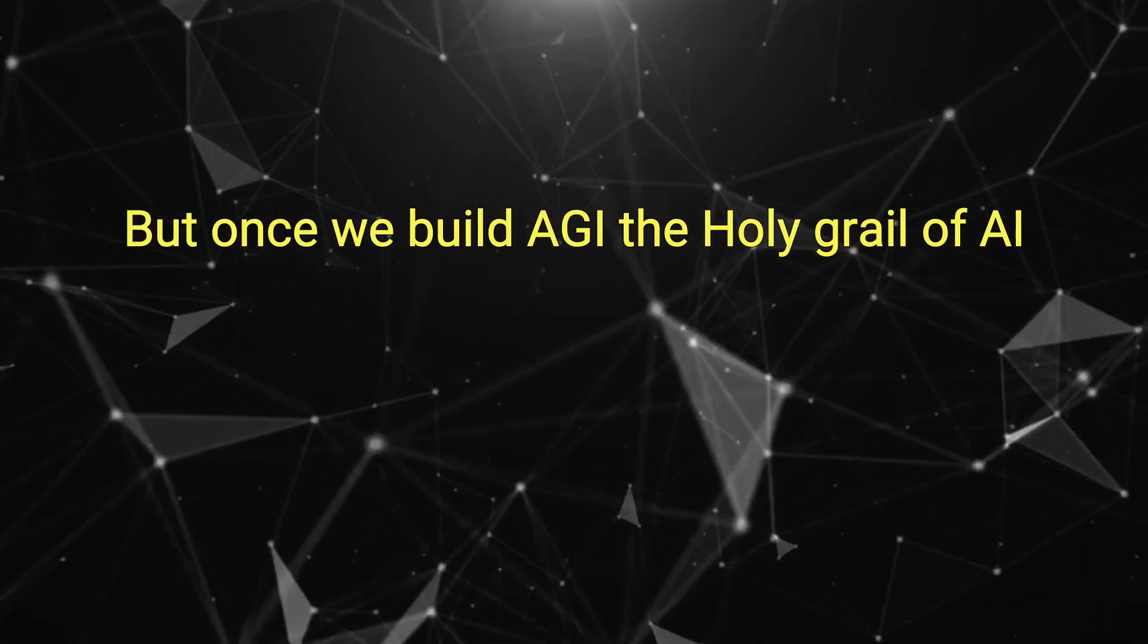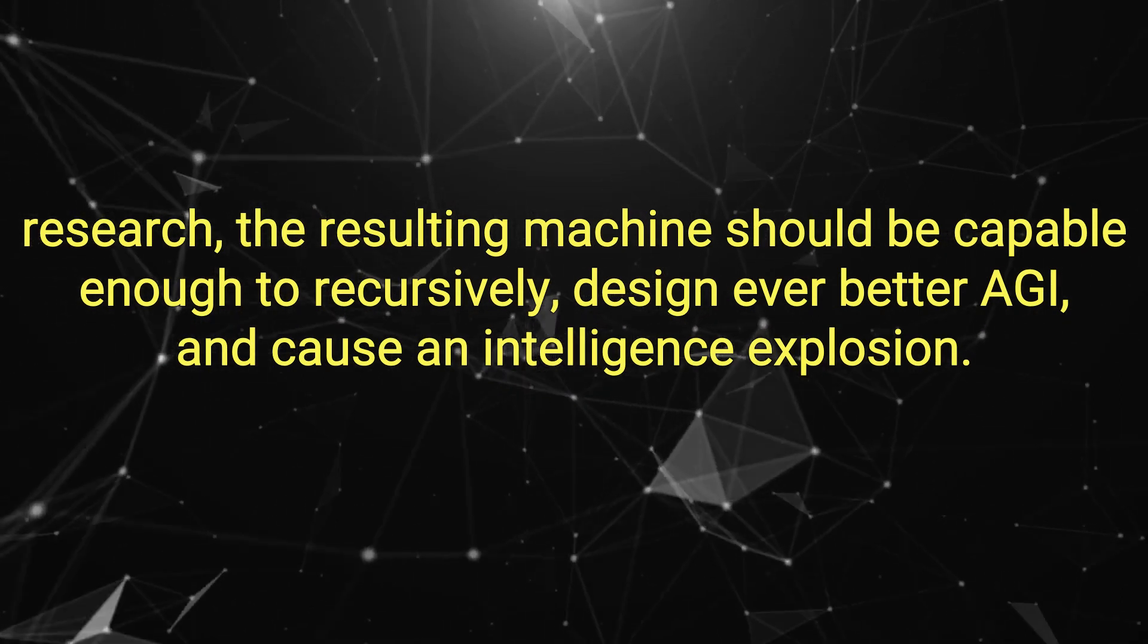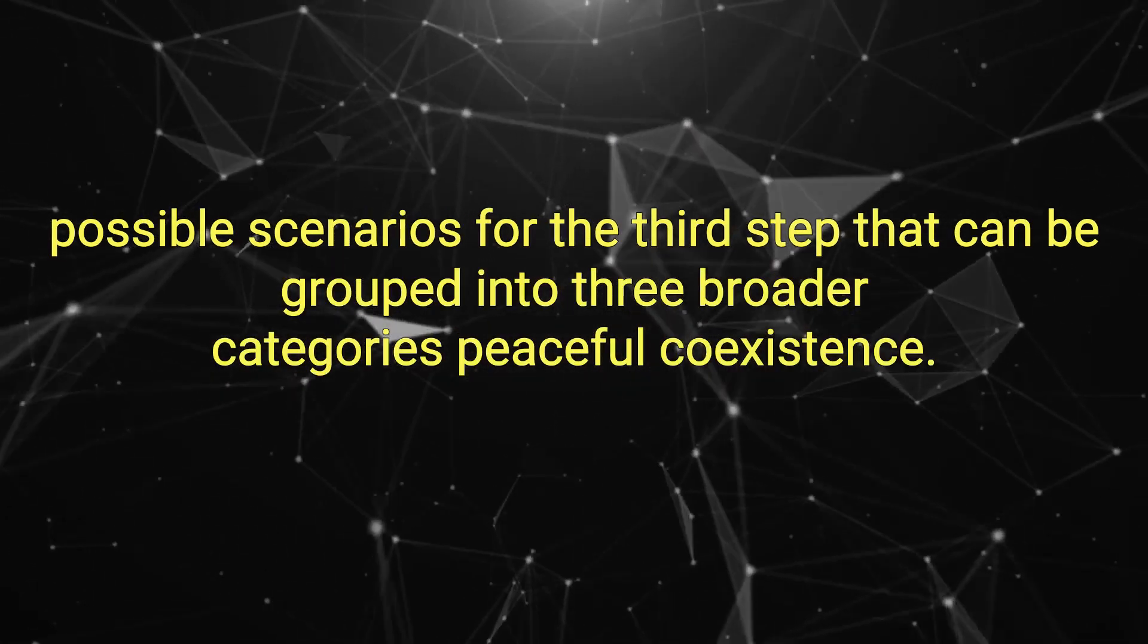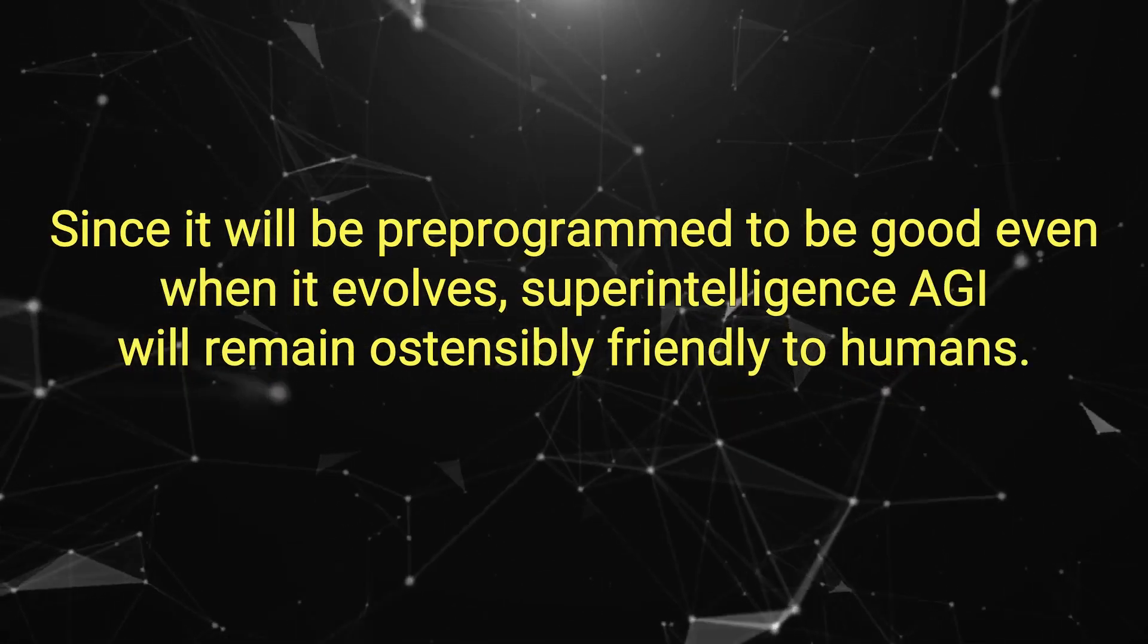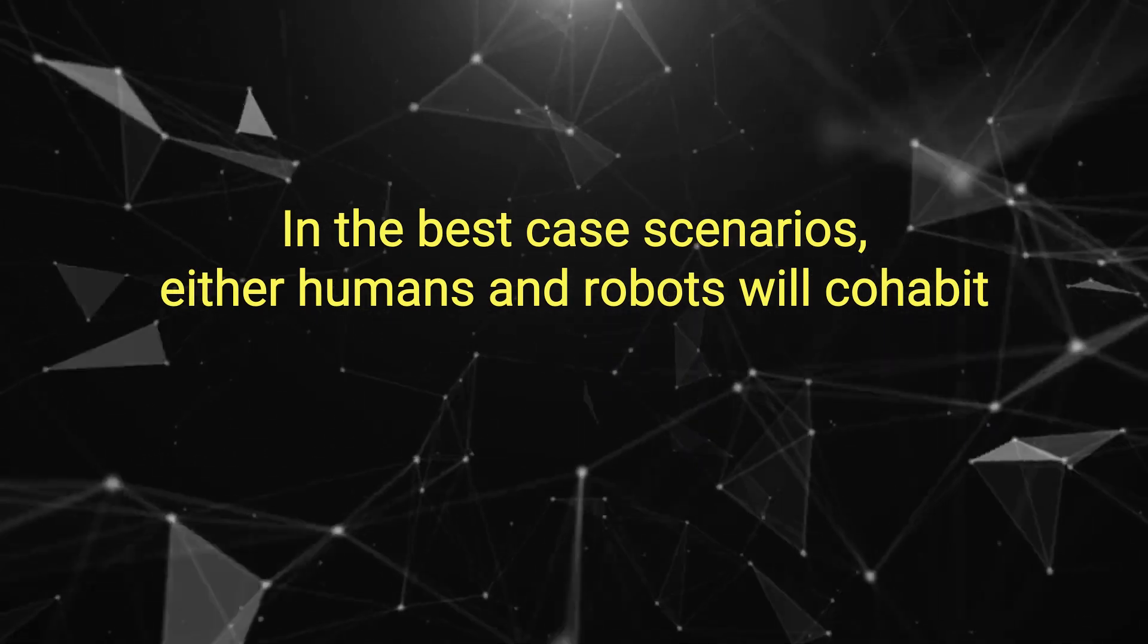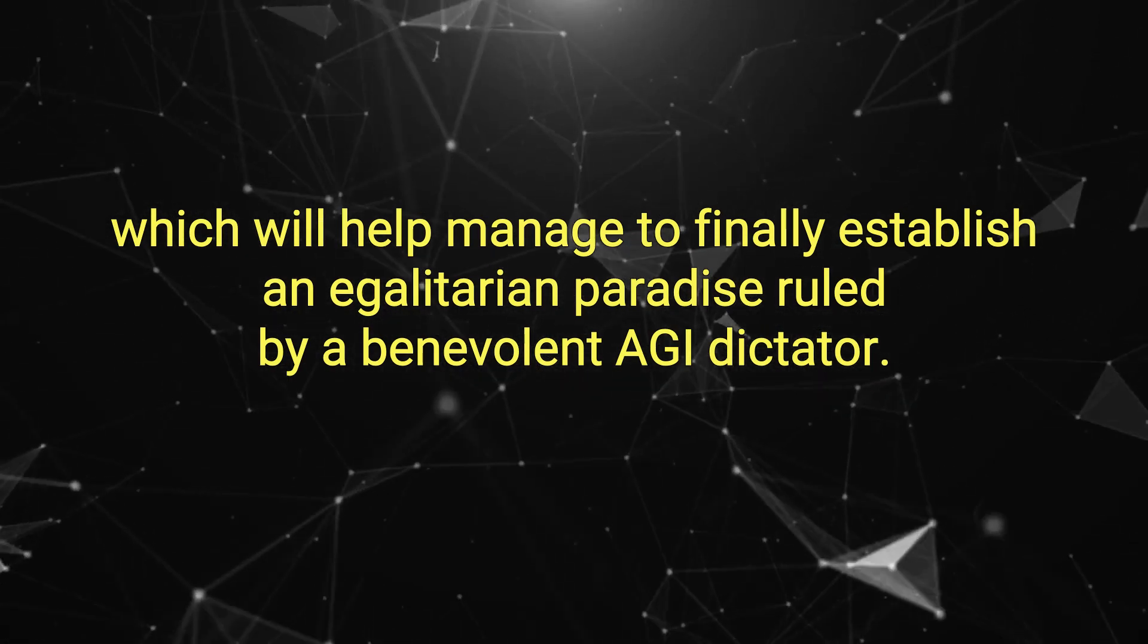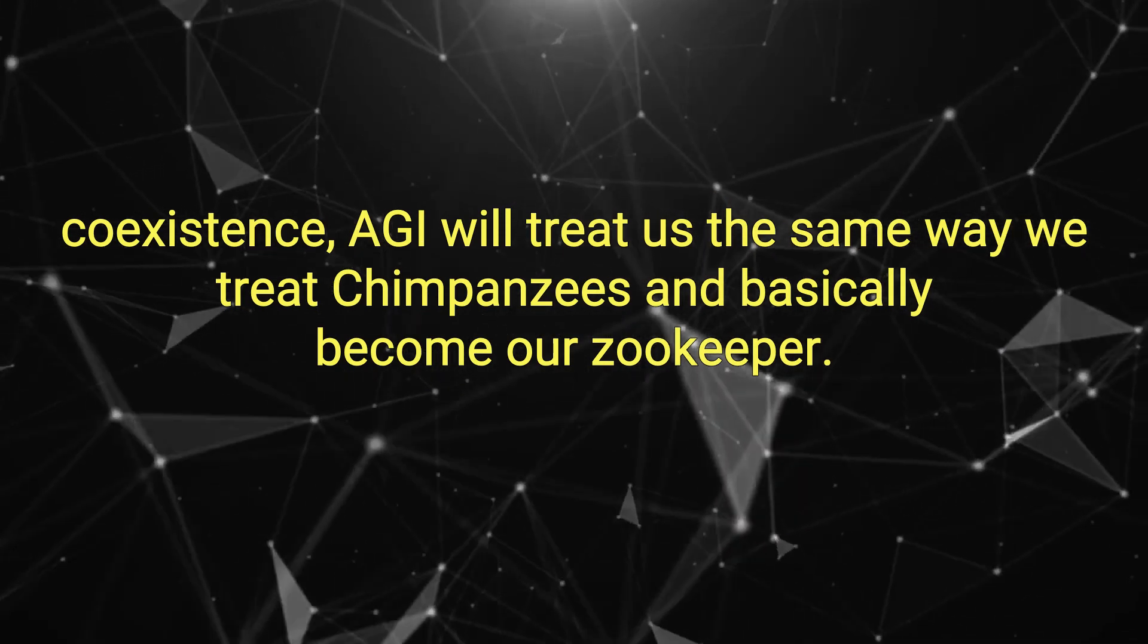However, there is absolutely no consensus on whether that will happen and where it might leave us as humans. AI experts have postulated and debated several possible scenarios that can be grouped into three broader categories. Peaceful coexistence: Since it will be pre-programmed to be good, even when it evolves superintelligence, AGI will remain ostensibly friendly to humans. In the best-case scenarios, either humans and robots will cohabit a libertarian utopia, or humans will be altruistically and efficiently ruled by AGI systems which will help establish an egalitarian paradise ruled by a benevolent AGI dictator. In the worst-case scenario of peaceful coexistence, AGI will treat us the same way we treat chimpanzees and basically become our zookeeper.